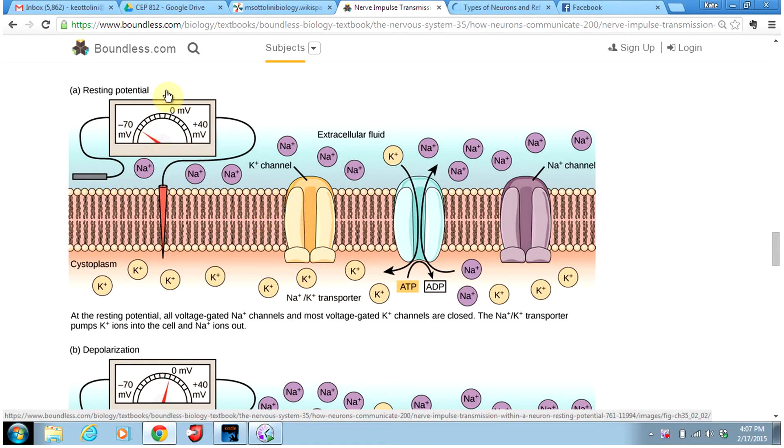This right here is what's called a voltage meter or a voltmeter. It shows a reference electrode on the outside with another electrode stuck on the inside of the nerve cell. It's just going to measure the difference between the extracellular fluid and the cytoplasm. It looks like in terms of charge, the inside of the cell is at negative 70 millivolts compared to the outside. It has a more negative voltage than the outside of the cell.